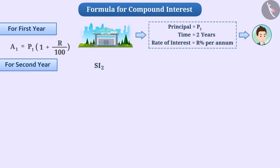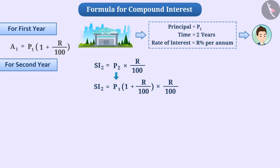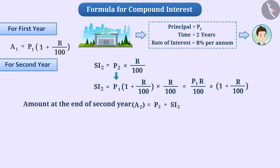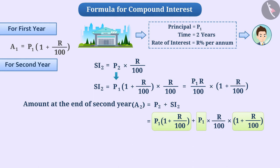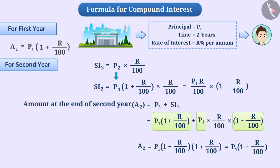For the second year, Si2 is equal to P2 multiplied by R by 100. Substituting P2 as P1 into bracket 1 plus R by 100, we get Si2 equal to P1 into bracket 1 plus R by 100 multiplied by R by 100, which simplifies to P1R by 100 multiplied by 1 plus R by 100. The amount at the end of the second year, A2 equals P2 plus Si2. Taking P1 into bracket 1 plus R by 100 as common, we get A2 equal to P1 into bracket 1 plus R by 100 raised to the power 2.